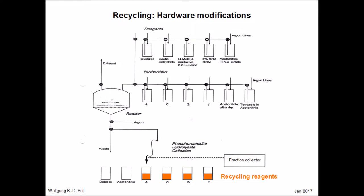Nucleoside recycling requires hardware modifications. One possibility is to divert the effluent of the reactor or column through a selector valve to corresponding waste bottles — one for each nucleoside. The diversion is possible when the signal from the computer that drives the synthesizer is used. That signal determines which nucleoside is pushed into the column in the first place.